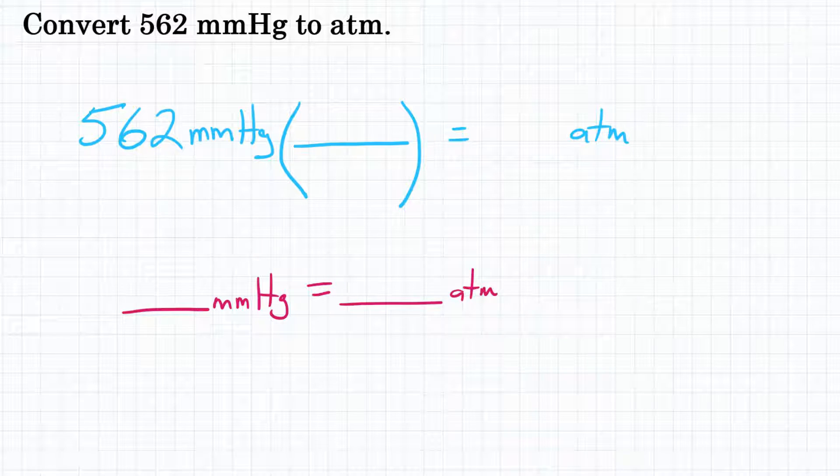There's a number of relationships we could use, and the most common is probably that 760 millimeters of mercury is equal to one atmosphere. So that is the relationship we're going to use up top.